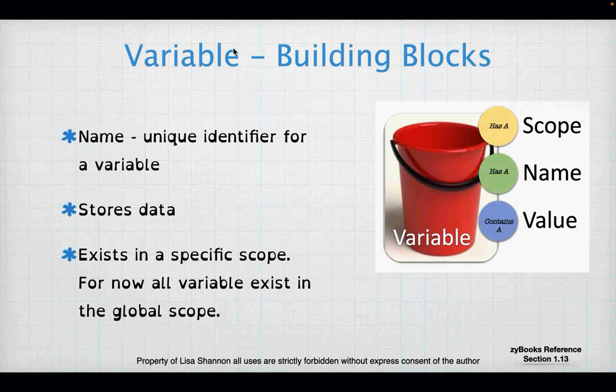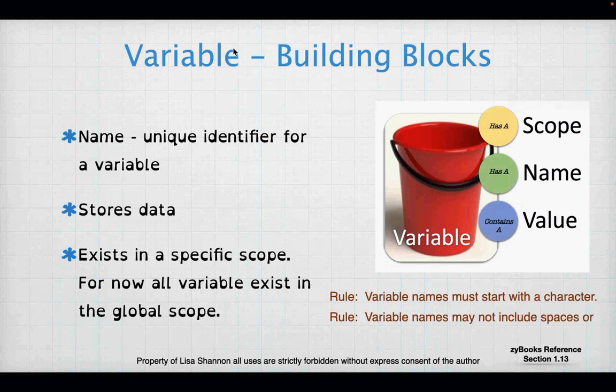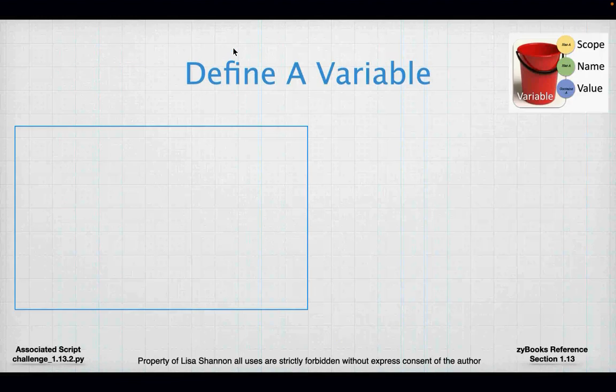Think about a variable like a bucket that you've written a name on with your Sharpie. A rule: variable names must start with a character. They may not include spaces or special characters. They can use an underscore, and that's it. It doesn't matter if it's uppercase or lowercase, but it has to start with a character.